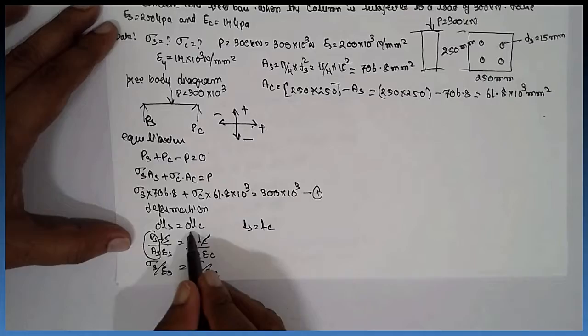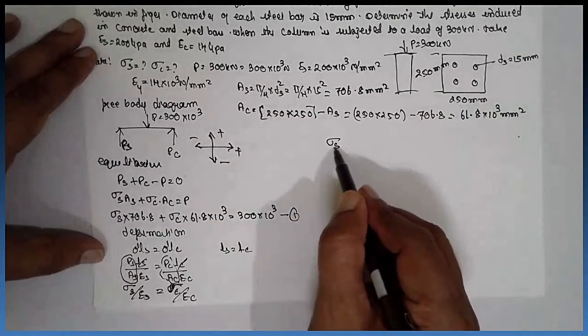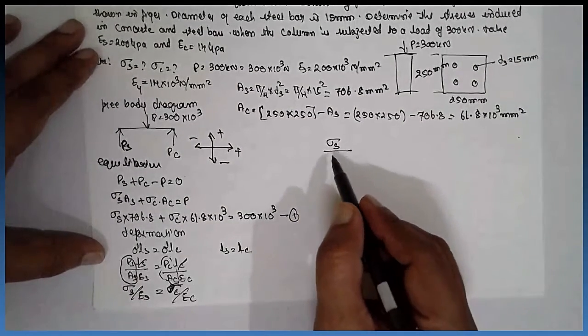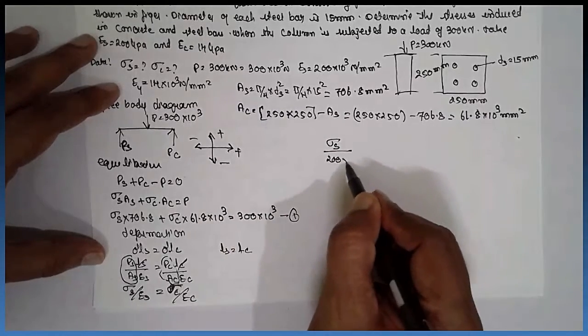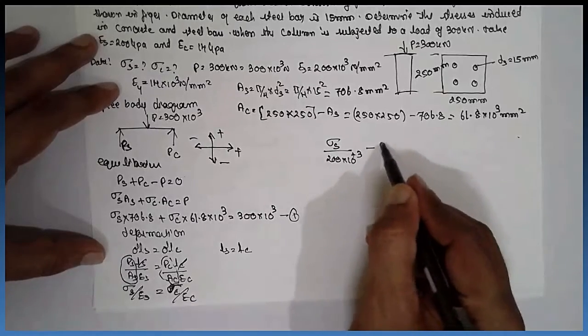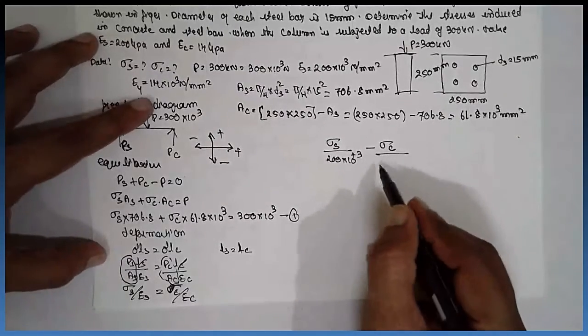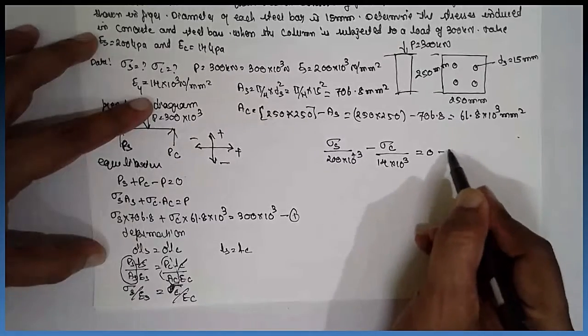Now further: Sigma S divided by Young's modulus for steel, 200 times 10 to the power 3, minus Sigma C divided by 14 times 10 to the power 3 equals zero. This is equation 2.